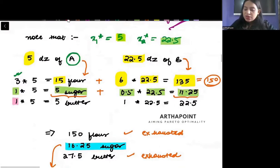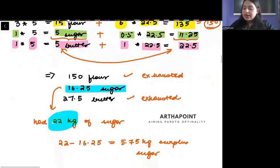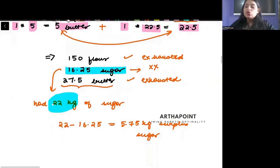Now, look at the third one. Each unit of cake A requires 1 kg of butter. I am producing 5 units, so it will use 5 kg of butter. Cake B also requires 1 kg of butter per unit. I am producing 22.5 units, so this will be 22.5 kg. 5 plus 22.5 is 27.5 kg. That is the butter I had.